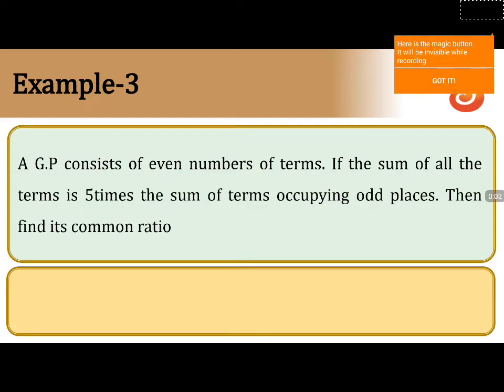Here, a GP consists of an even number of terms. Let the number of terms equal 2n.